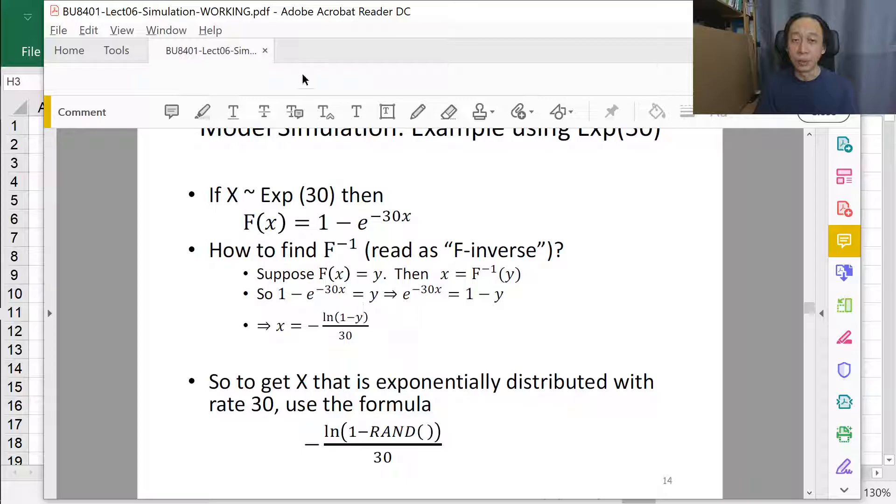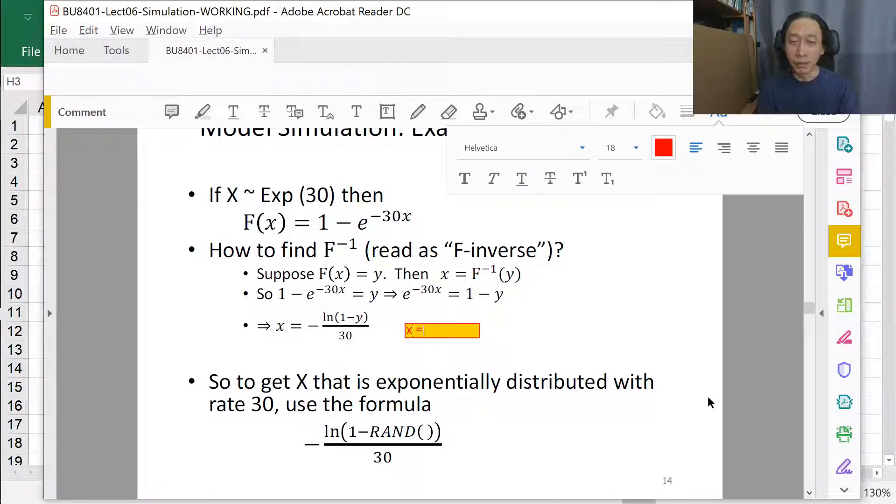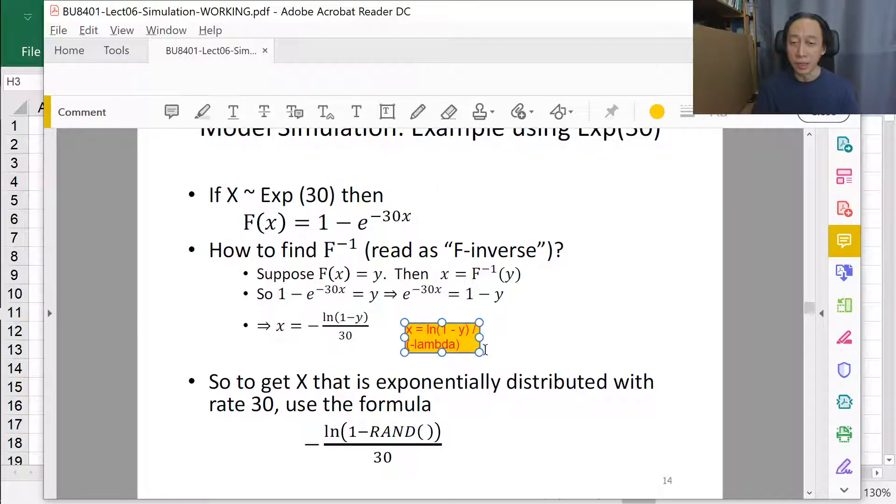The value of x is given by ln of 1 minus CDF divided by negative lambda. To put it in the text, the generated simulation value is the ln of 1 minus CDF value divided by negative lambda. The negative is important because it is part of the CDF function, original CDF function.